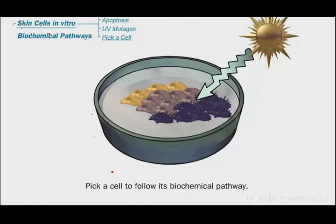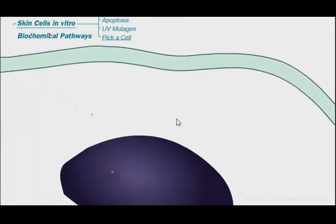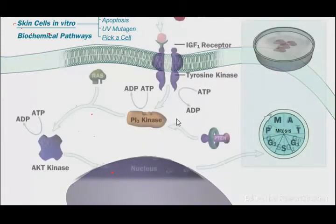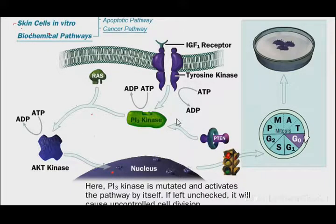So this is our normal pathway. Next, we can see how cancer cells differ in their cell cycle. IGF-1 is a growth factor. If you don't have a growth factor, what happens when there is a mutation in PI3 kinase?